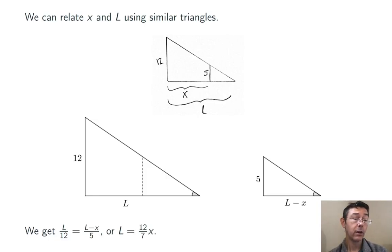Using similar triangles we get L over 12 equals L minus X over 5. Cross multiplying and simplifying a little bit, that becomes L equals 12 sevenths times X.